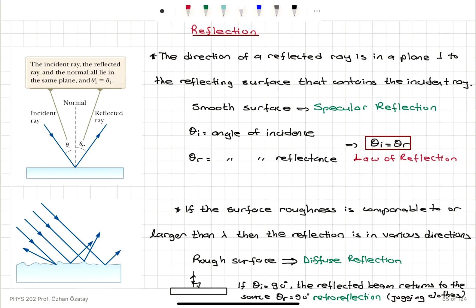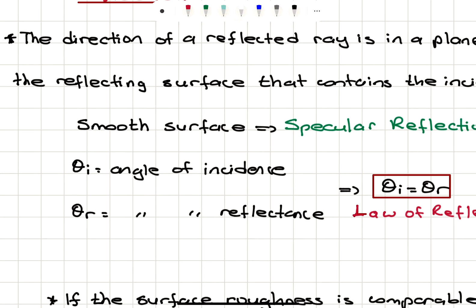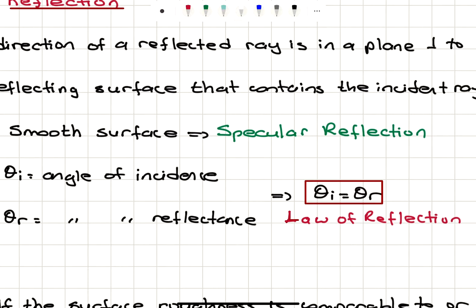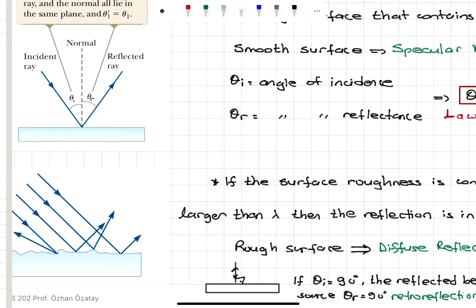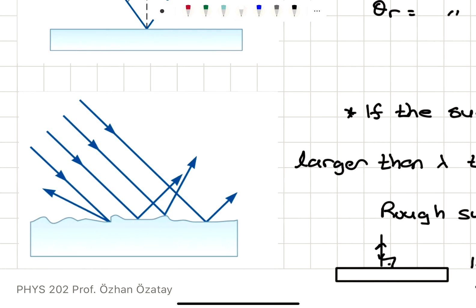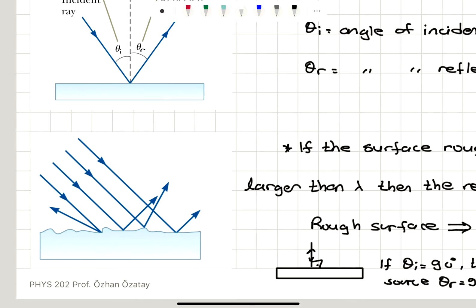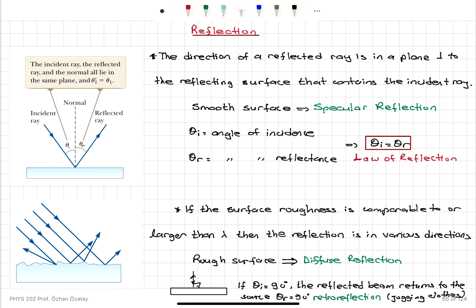We have two types of reflection, and it depends on the roughness level of the surface. If the surface is a smooth surface, we call it specular reflection. This is where the law of reflection will apply. And if we have a rough surface where the roughness is comparable to or larger than the wavelength of light, then the reflection is called diffuse reflection.